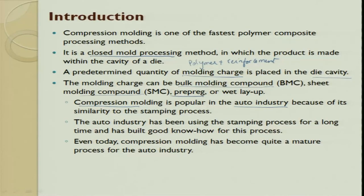The automotive industry uses compression molding for large surface area products such as bonnet covers and machine covers — secondary structures that provide covering rather than bearing load. Because of their existing knowledge from metal stamping, the automotive industry quickly developed know-how in compression molding. Today, compression molding is very mature; flow patterns and process parameters are well understood.